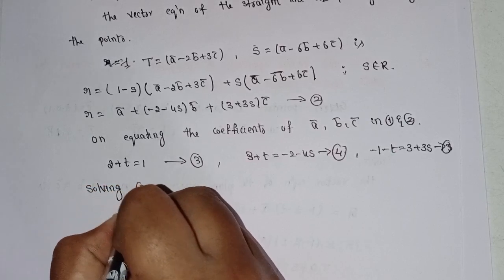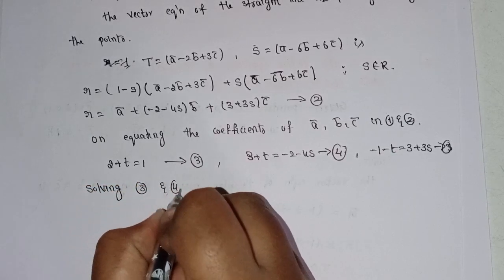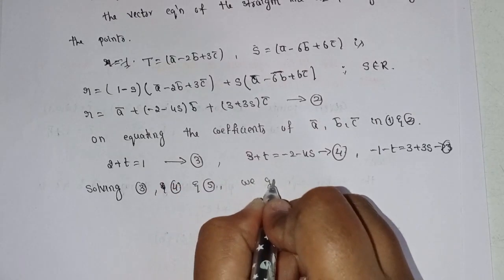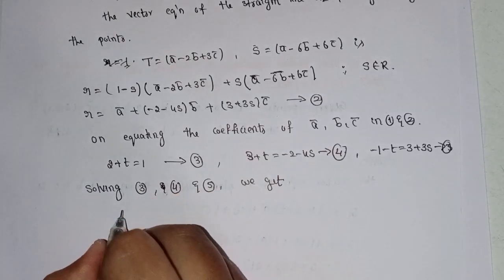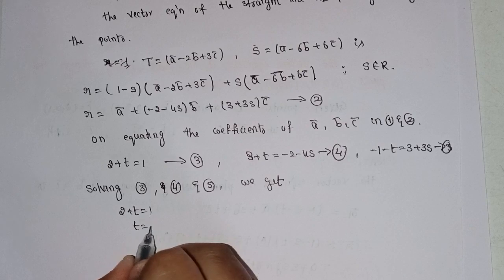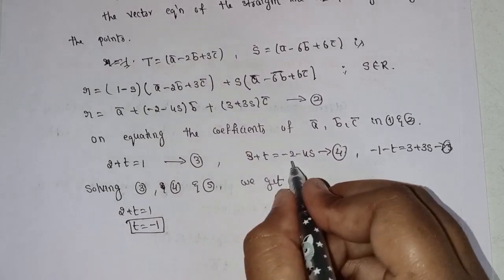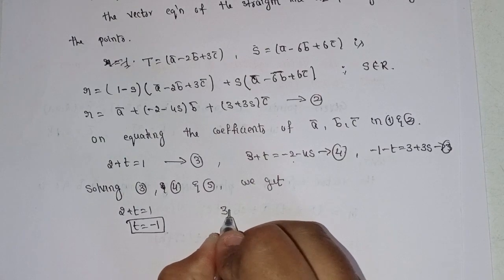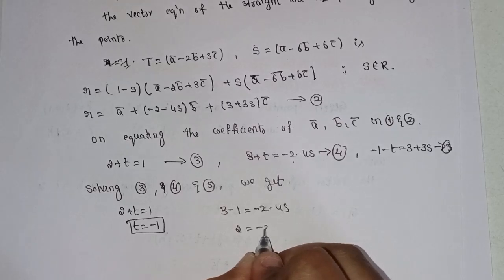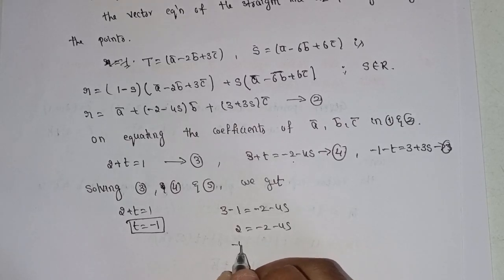We get 2 plus t equal to 1 (equation 3), 3 plus t equal to minus 2 minus 4s (equation 4), and minus 1 minus t equal to 3 plus 3s (equation 5). Solving equations 3, 4, and 5, we get t equal to minus 1 and s equal to minus 1.